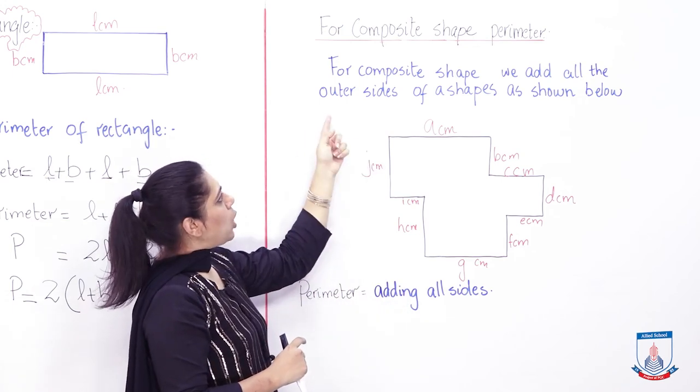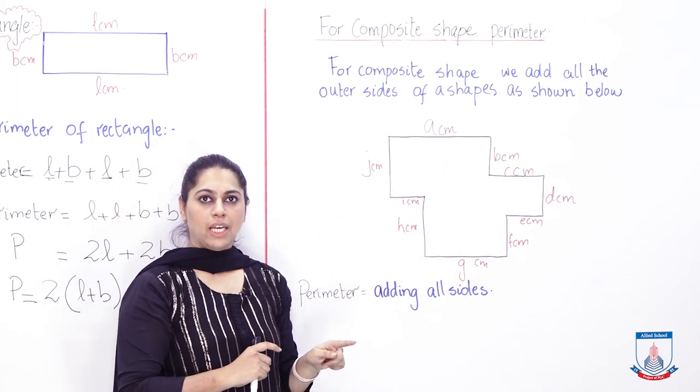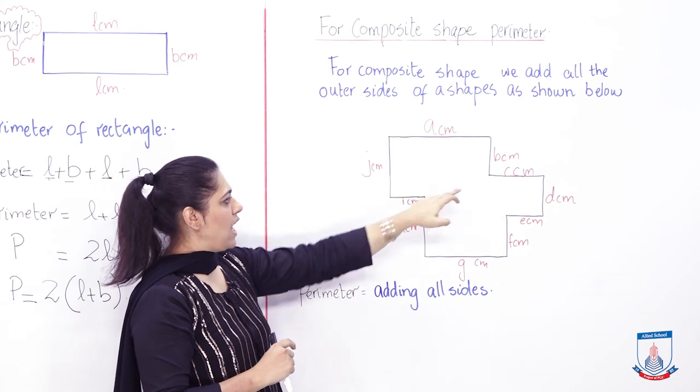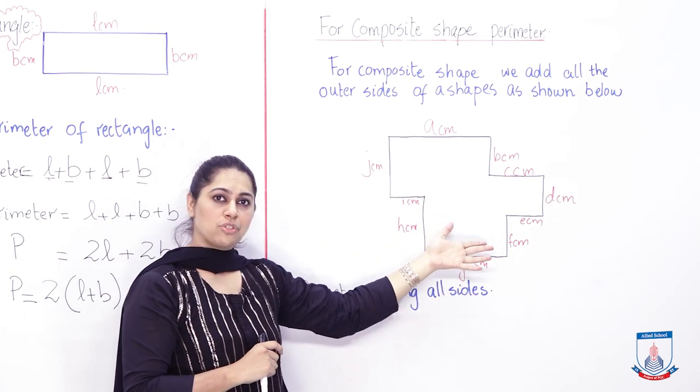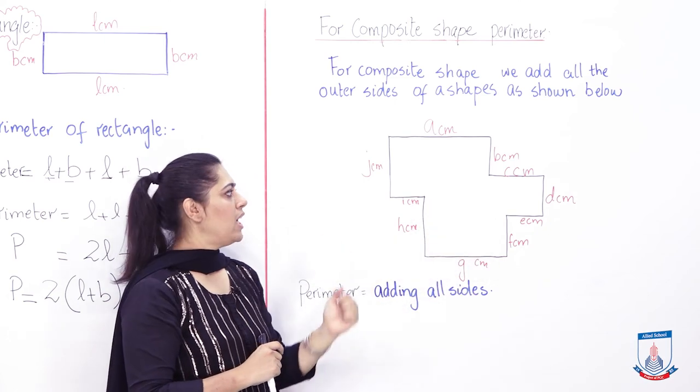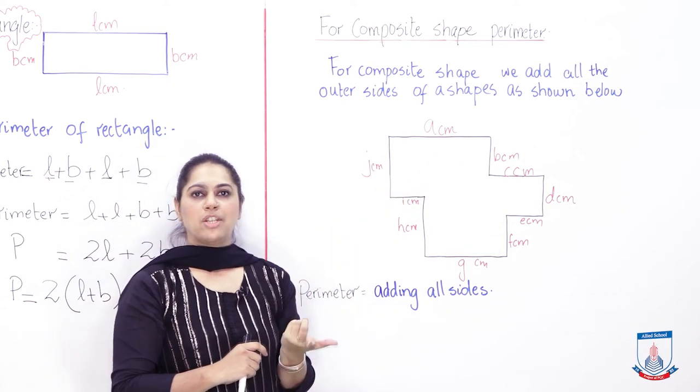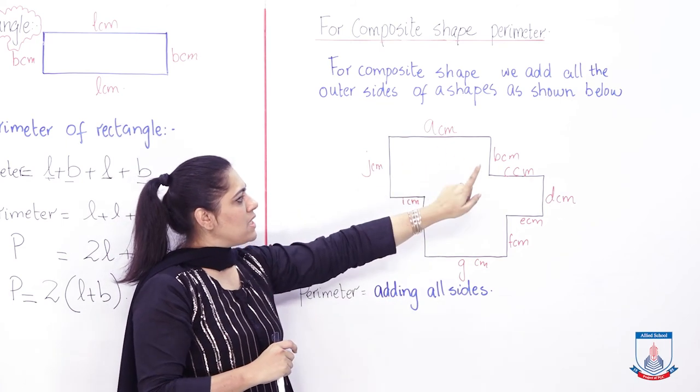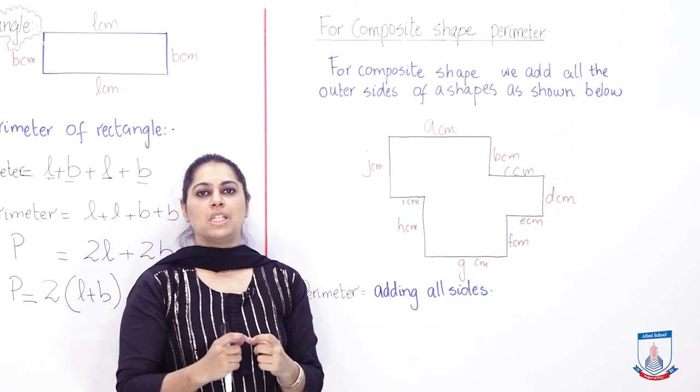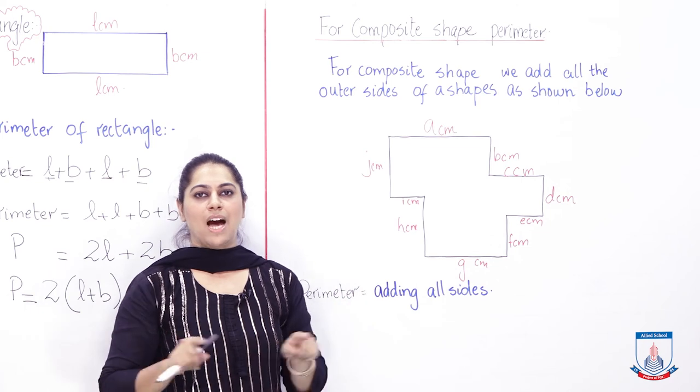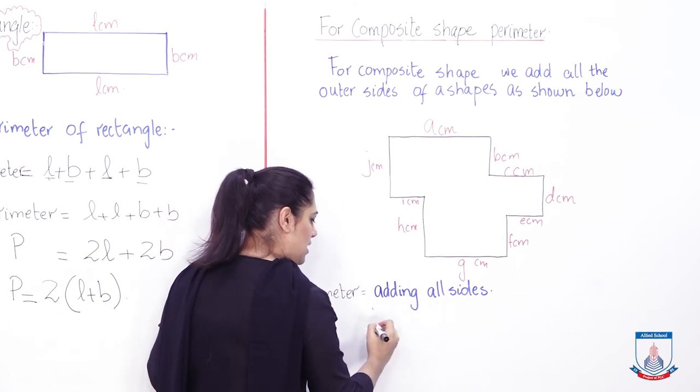So now if you are asked to find out perimeter, you have to add all the sides. Let's see what we did. First we see the definition, then we are going to go with the question. For a composite shape, we add all the outer sides of the shape. The measurements we took on outer sides, we will add them. You can see over here, some shapes will look like rectangles, some like squares, some big squares, some small rectangles. Now I have measured their outer shape. I just gave them imaginary names like a centimeter, b centimeter, c centimeter.